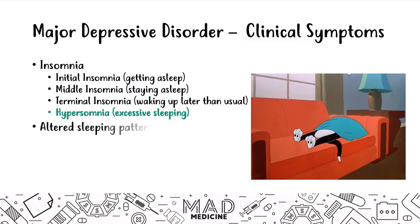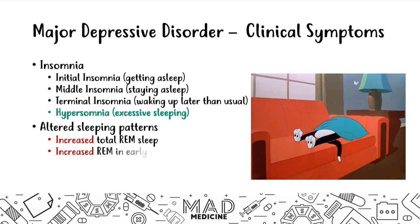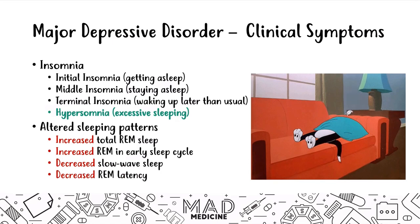These sleeping patterns manifest in several ways. Patients can have an increase in total REM sleep, increased REM early on in their sleep cycle, decreased slow-wave sleep, and decreased REM latency. Just understand that in MDD, sleeping patterns get really disrupted — that is very common.